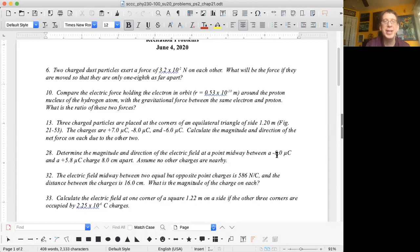Then we move on to number 13. Three charged particles are placed on the corners of an equilateral triangle of side 1.20 meters. You're given the charges, and you're asked to calculate the magnitude and direction of the net force on each due to the other two. What I recommend doing is figuring out the individual forces and express them in unit vector notation.